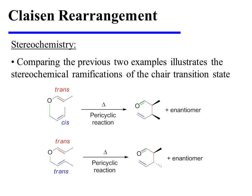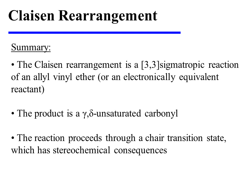A side-by-side comparison of the two previous examples illustrates the stereochemical ramifications of the chair-like transition state. What we notice is that different configurations of the reactant yield different stereochemical outcomes. In summary, the Claisen Rearrangement is a 3-3-sigmatropic reaction of an allyl vinyl ether, or an electronically equivalent reactant. The product is a gamma-delta unsaturated carbonyl, and the reaction proceeds through a chair-like transition state, which has stereochemical consequences.